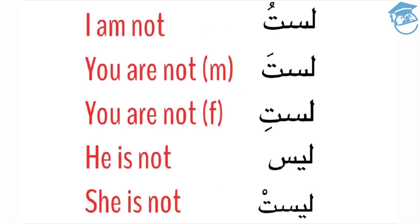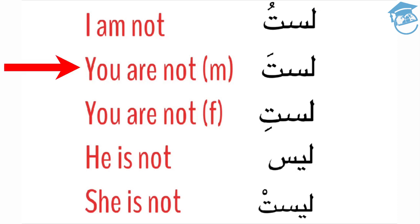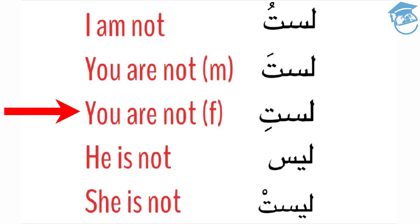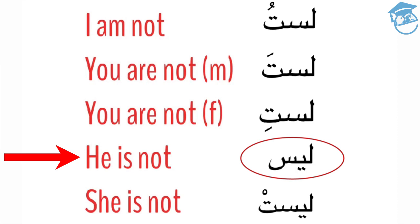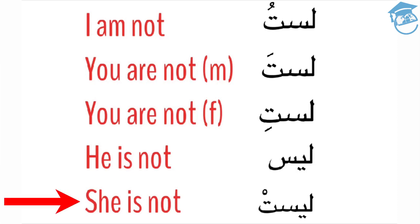Let's look at how we conjugate the verb leysa, first in the singular. To say 'I am not,' we say lasto. To say 'you are not' for a male, we say lasta. To say 'you are not' for a female, we say lasti. To say 'he is not,' we say laysa. And to say 'she is not,' we say laysat.